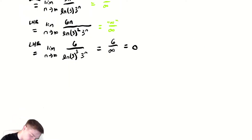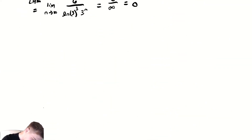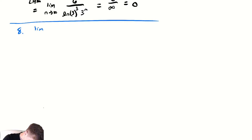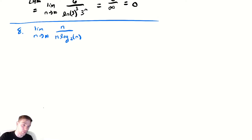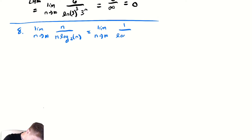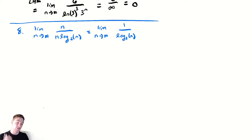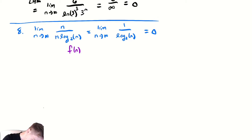For problem 8, we're looking at n versus n log n - specifically n divided by n times log base 2 of n. If we look carefully, we notice some nice cancellation: n cancels with n and we're left with 1 over log base 2 of n. The limit as n goes to infinity of 1 over log base 2 of n goes to 0, which means f(n) is in big O of g(n) - the denominator is the faster growing function.